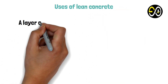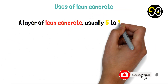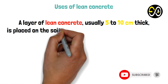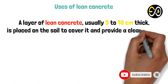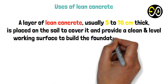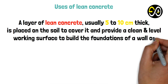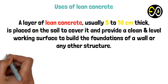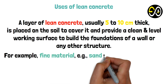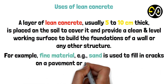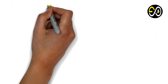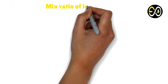Uses of lean concrete: A layer of lean concrete, usually 5 to 10 centimeters thick, is placed on the soil to cover it and provide a clean and level working surface to build the foundations of a wall or any other structure. Fine material such as sand is also used to fill in cracks on a pavement or earthworks layer.